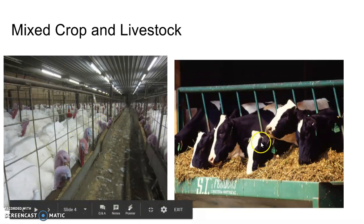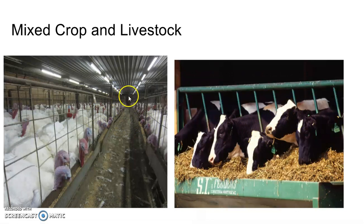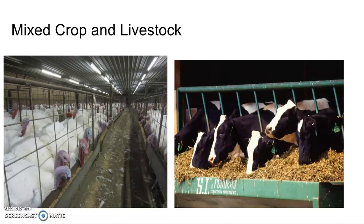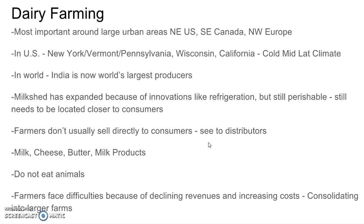The animals stay in some sort of shelter or dwelling, and the corn, soybean, or wheat grown on that farm is typically fed directly to the animals — as shown in the pictures.